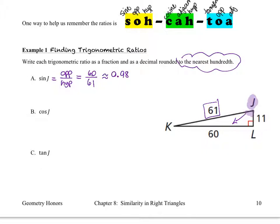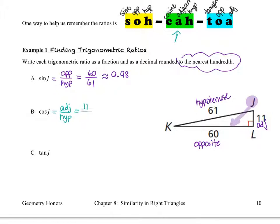Now let's take a look at the cosine of angle J. As we're getting used to these trigonometric ratios, it's worth labeling our triangles depending on which angle is of interest. I've relabeled the triangle with opposite, adjacent, and hypotenuse, all in reference to angle J. When it comes to the cosine of angle J — the CAH part of SOHCAHTOA — cosine stands for adjacent over hypotenuse. The adjacent side to angle J measures 11 and the hypotenuse measures 61. That gives us approximately 0.18.